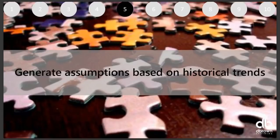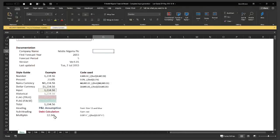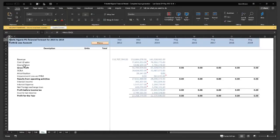Let me open a demo file to show how you generate assumptions. This is the restructured P&L showing revenue, cost of sales, depreciation, SG&A, amortization, and similar items. We've restructured our P&L and balance sheet. The secret to generating assumptions is to highlight all the lines of your P&L, copy them, go to your input sheet, and paste the line items there. You build an assumption for each line.